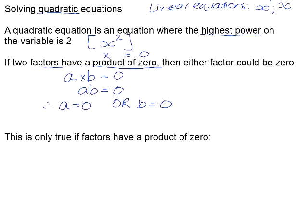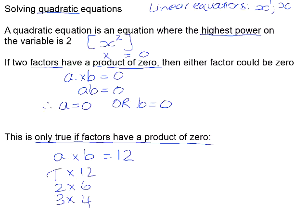But I just want to draw your attention to the fact that this is only true if the product is 0. So if you, for example, have a times b equals 12, then we can't say for sure that a must be 0 or b must be 0. In fact, there is a range of numbers that could make this true. It could be 1 times 12, it could be 2 times 6, it could be 3 times 4. So it is not possible for us to conclude a specific value for either a or b that would make this equation true. So it must have a product of 0, otherwise we are unable to solve.